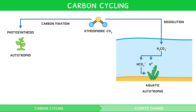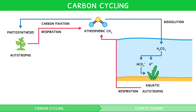Regardless of the location of the autotroph, both can later release CO2 via cell respiration. For higher-level students, this process will be covered in greater depth in Topic 8 of the IB Biology syllabus. CO2 can also be transferred from autotrophs to primary, secondary and tertiary consumers through the food chain via predation.